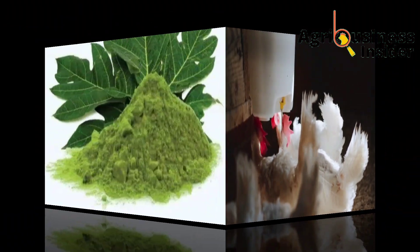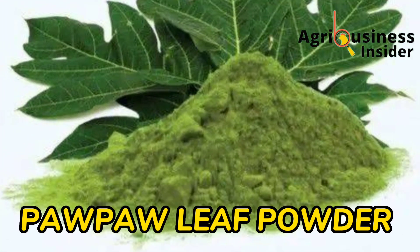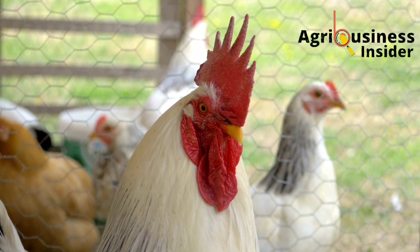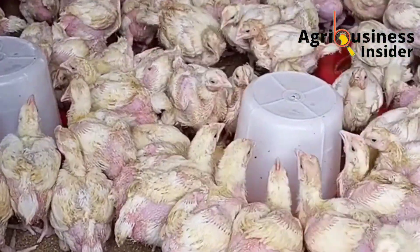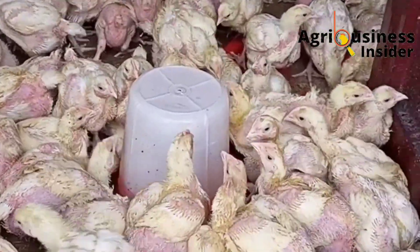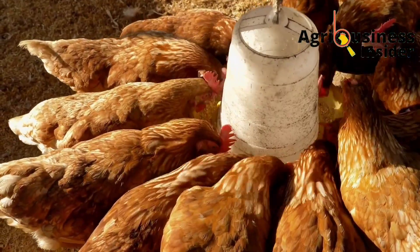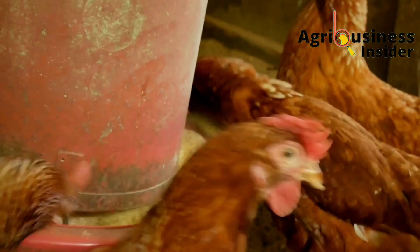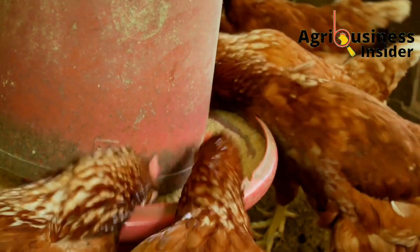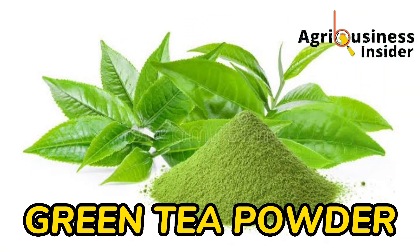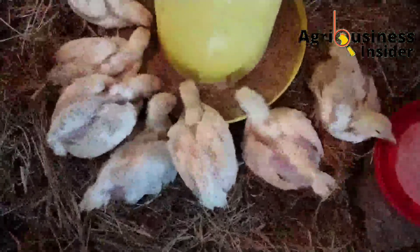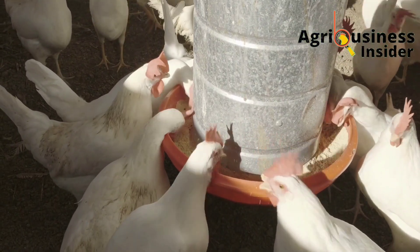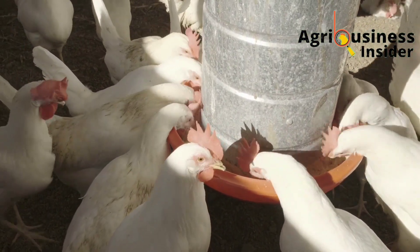The second treatment is papaya leaf meal. For the dosage, you can add it either into the water or into the feeds. If adding to water, add 150 grams of papaya leaf powder per liter of the chickens' drinking water. If adding to feeds, add 150 grams of this powder per kilogram of chicken feed. The third important organic treatment is green tea powder. For broilers, add 0.5 grams of green tea per kg of feed. For layers, add 2 grams of green tea powder per kg of chicken feed.